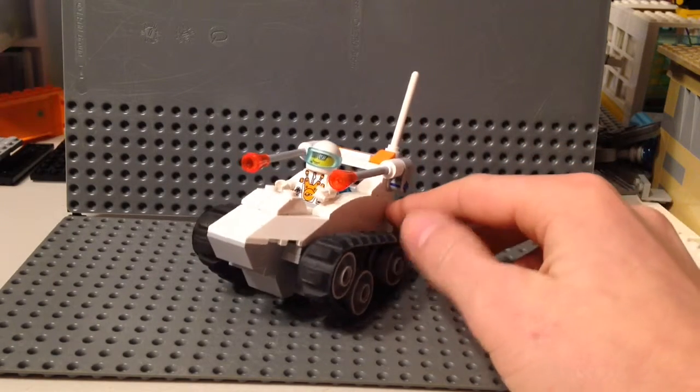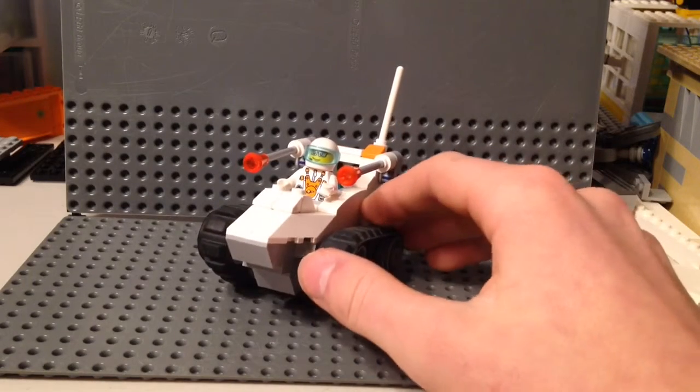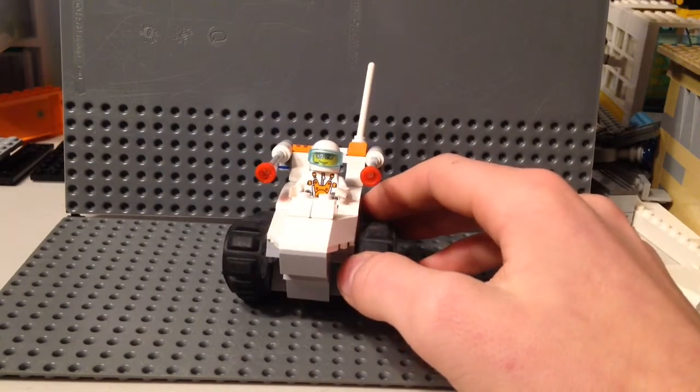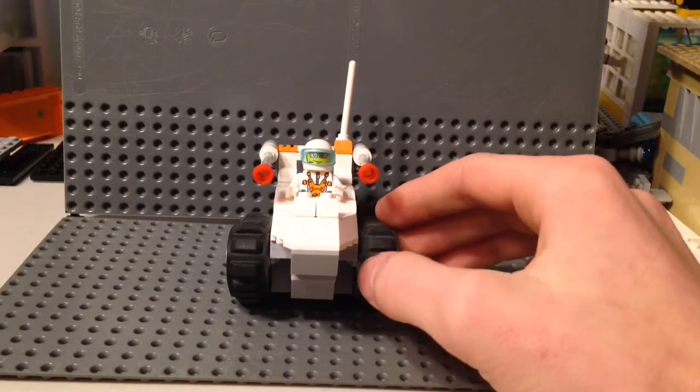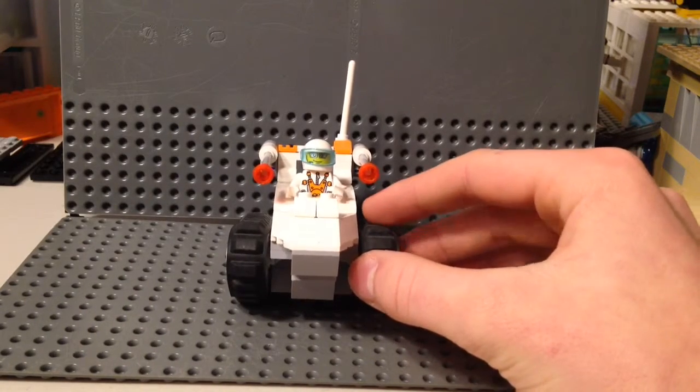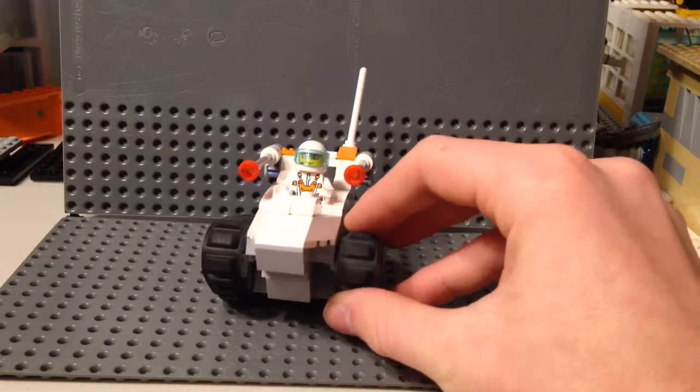Inspiration for building this creation came from the tank treads that were used and the color scheme of this Mars mission's torso piece, the orange and white grays color scheme.